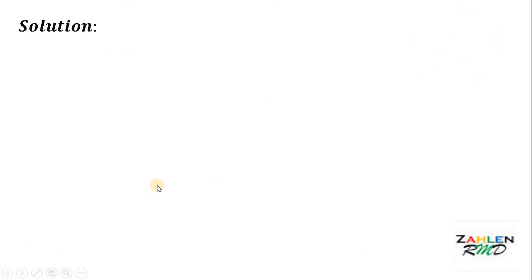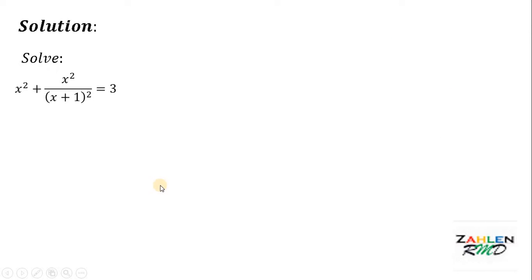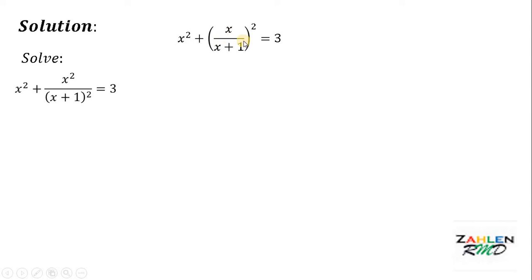I hope you paused this video. Now let's see if you got the correct answer. Let's have our equation again: x squared plus x squared all over x plus 1 squared equals 3. Now the second term, x squared all over x plus 1 squared, can be written as x over x plus 1, quantity squared.